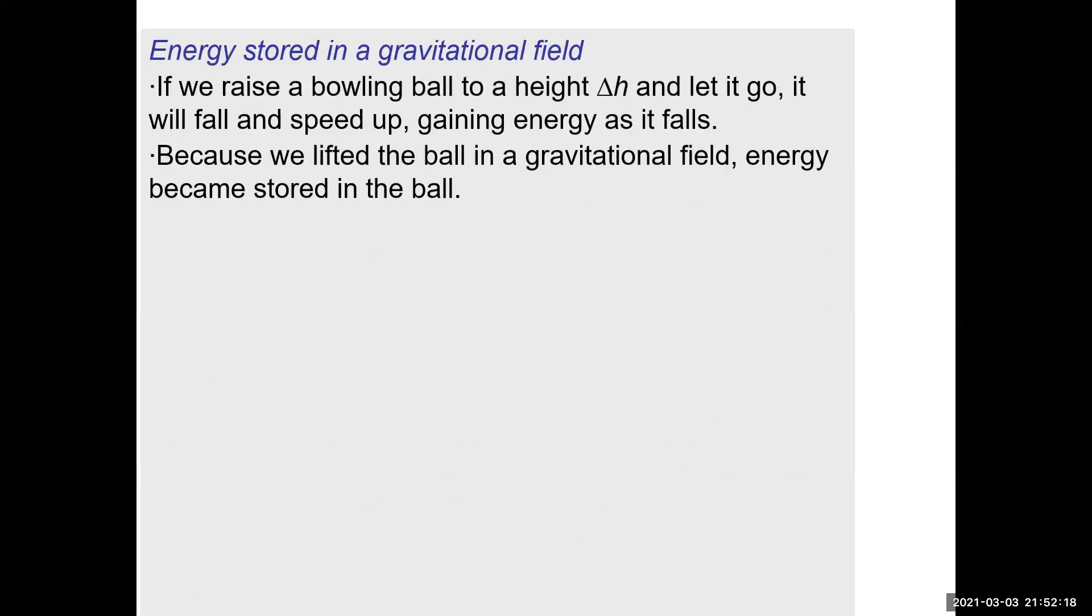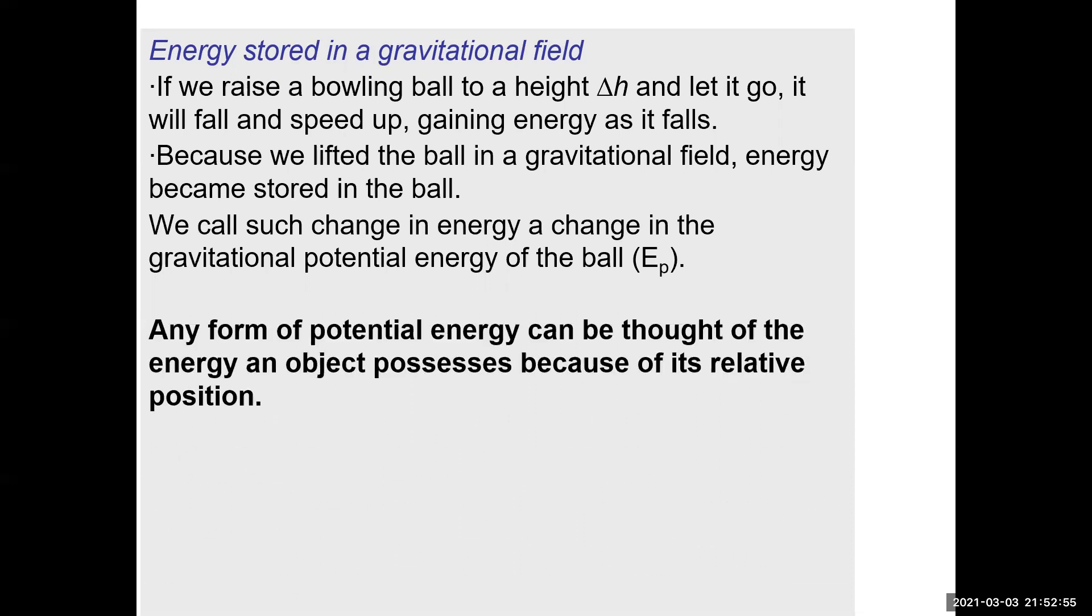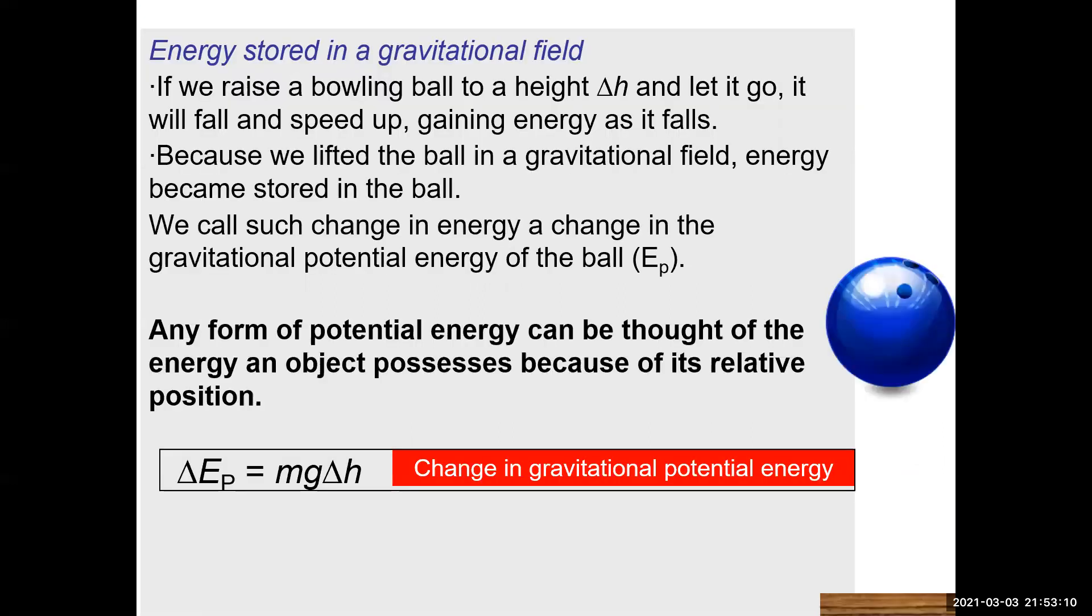Energy stored in a gravitational field. Let's say we take a bowling ball and raise it to a certain height and let it go. It's going to fall. It's going to speed up, gaining kinetic energy as it falls. And so because we've lifted the ball in a gravitational field—gravitational field means that the earth, a big massive object, distorts space all around it in a certain way. Energy is stored in the ball because of its position in the gravitational field. And so we call that type of energy gravitational potential energy.